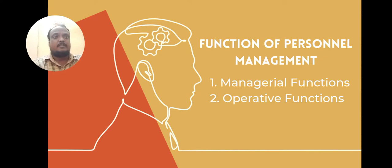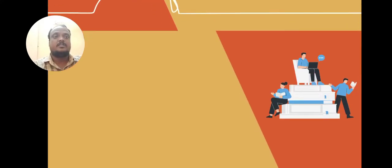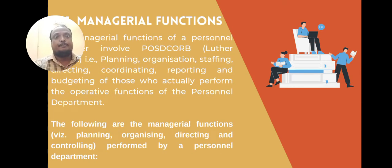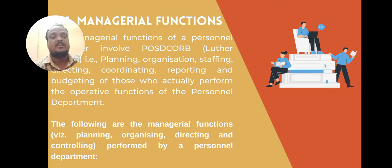Functions of Personnel Management: There are two main functions of personnel management. The first one is called managerial functions and the second one is called operative functions. Managerial functions of a personal manager involve planning, organizing, staffing, directing, and coordinating.